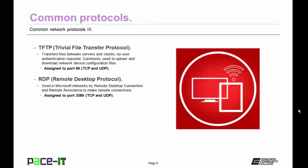Then there is TFTP — Trivial File Transfer Protocol. It transfers files between servers and clients with no user authentication required and no encryption in place. It's commonly used to upload and download network device configuration files, assigned to port 69 and using TCP and UDP at layer 4. Then there is RDP — Remote Desktop Protocol — used in Microsoft networks by Remote Desktop Connection and Remote Assistance to make remote connections to desktop systems. It's assigned to port 3389 by default and uses TCP and UDP at layer 4.